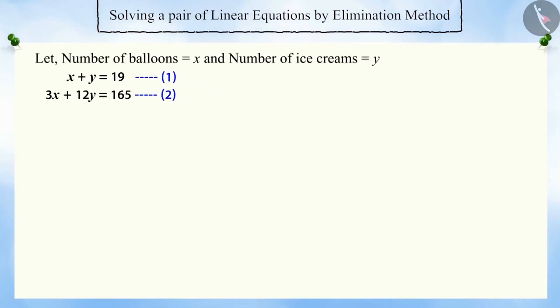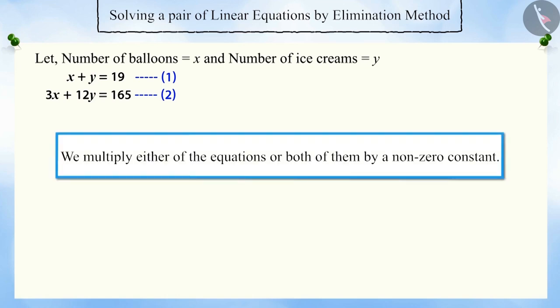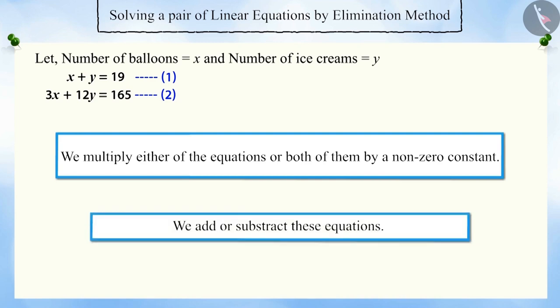First of all, let's make the coefficient value of any one of the variables x or y the same in both the equations. For doing so, we multiply either of the equations or both of them by a non-zero constant and add or subtract them.